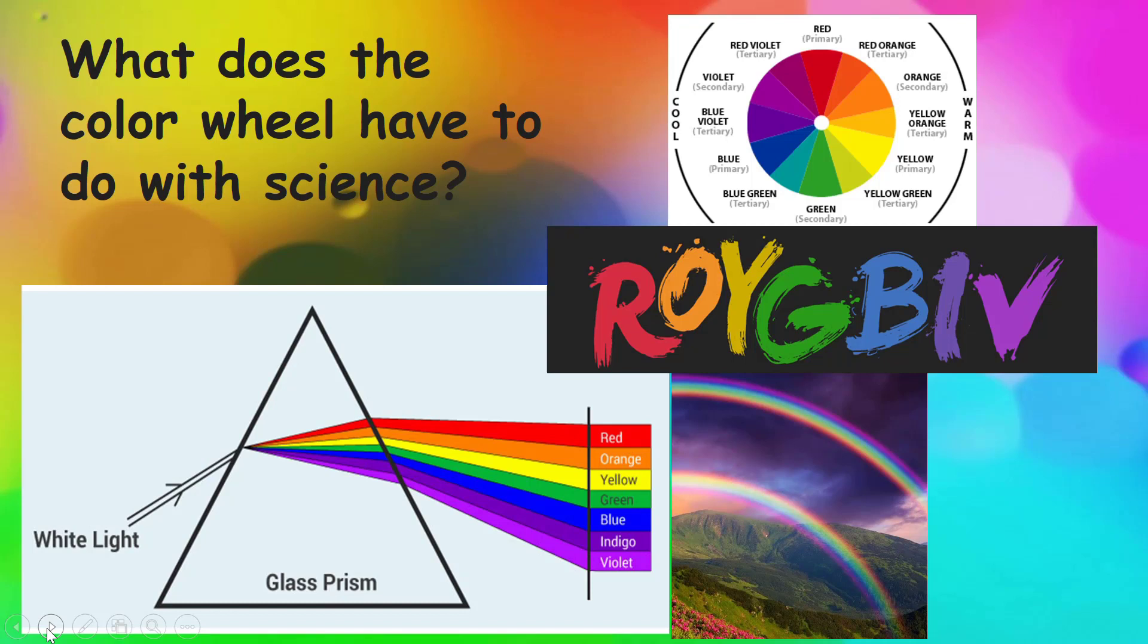Sometimes when you see a rainbow in the sky, that's what is happening when white light from the sun is being broken into individual color wavelengths by passing through water molecules. That's pretty cool. And that's exactly the same as the color wheel.